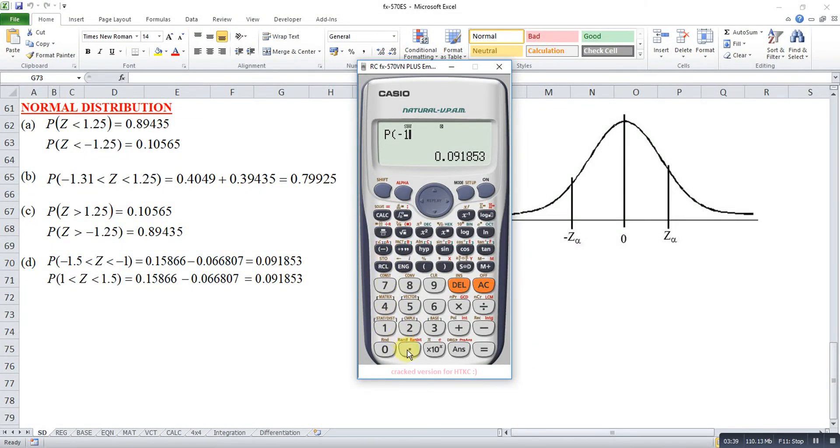Maybe we press negative 1.5. Then minus Shift 1. Look for 5. Then P, 1. Negative 1.